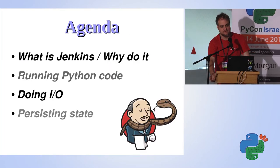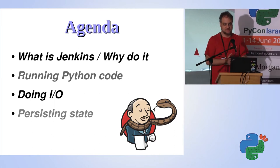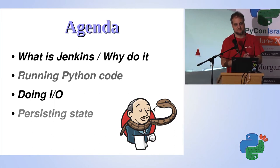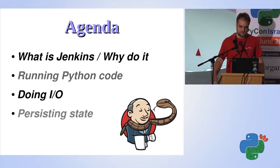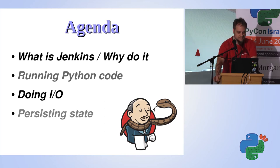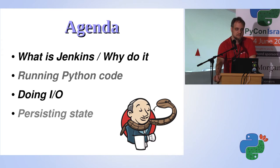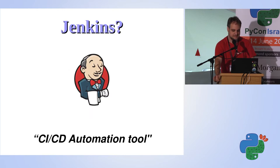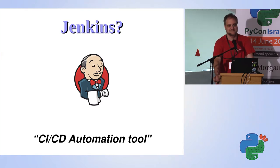So what I'm going to talk about: a little bit about what Jenkins is — most of you guys already know it — I'm going to talk about why run Python code in Jenkins and how to do it, how to do IO for that Python code, how to get data in and out of it, and also how to use some tricks to get some persistent state.